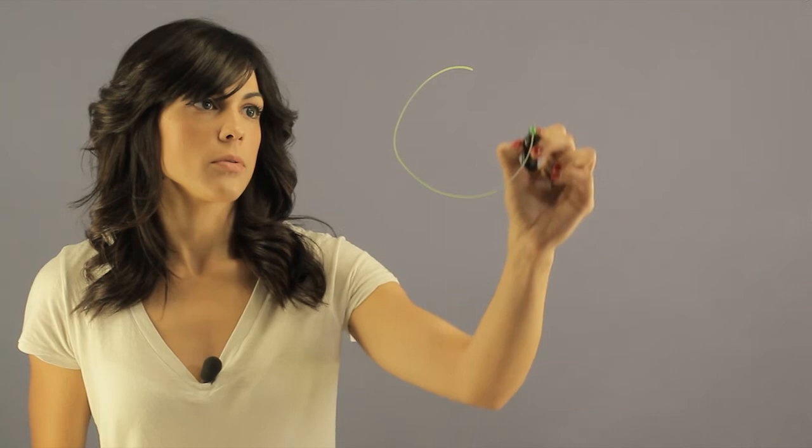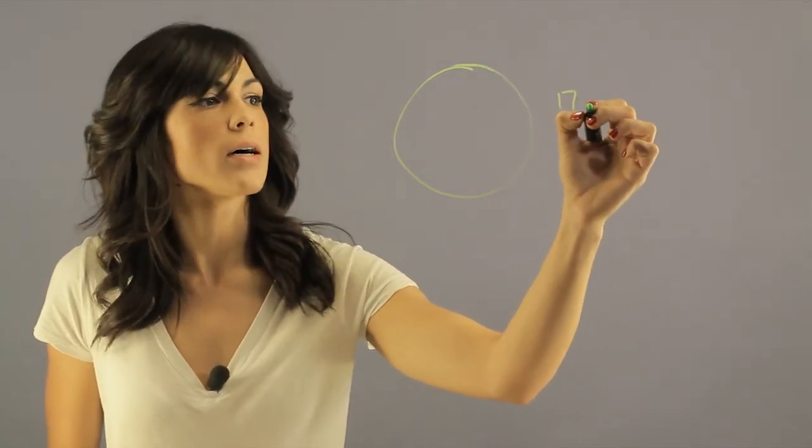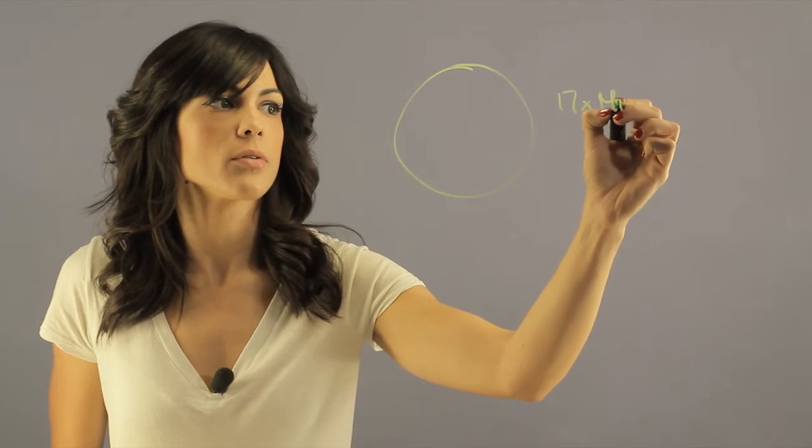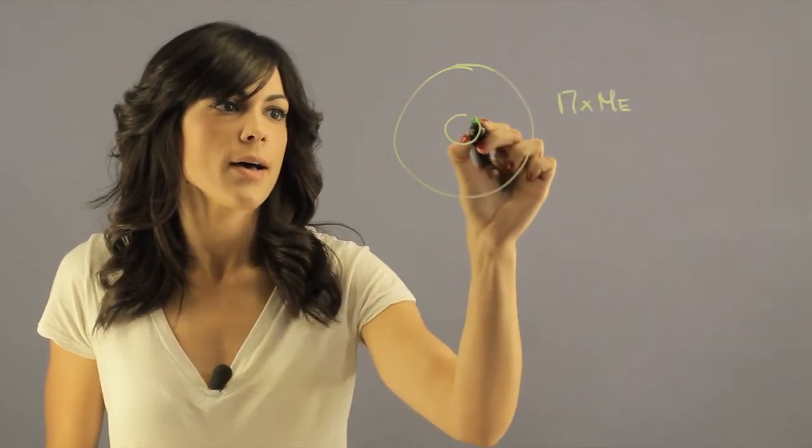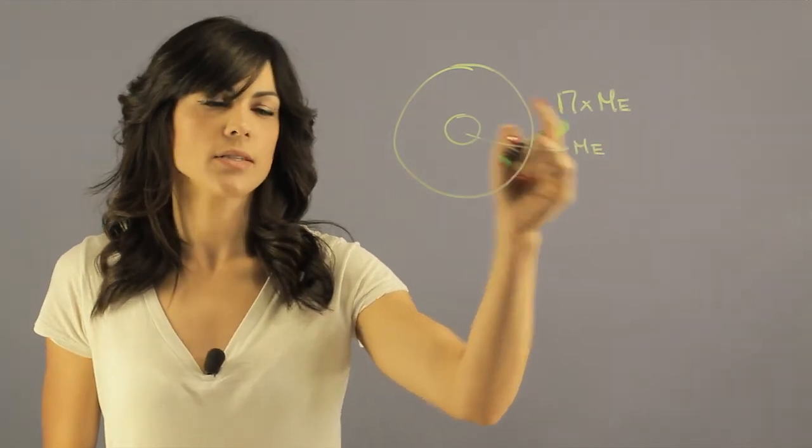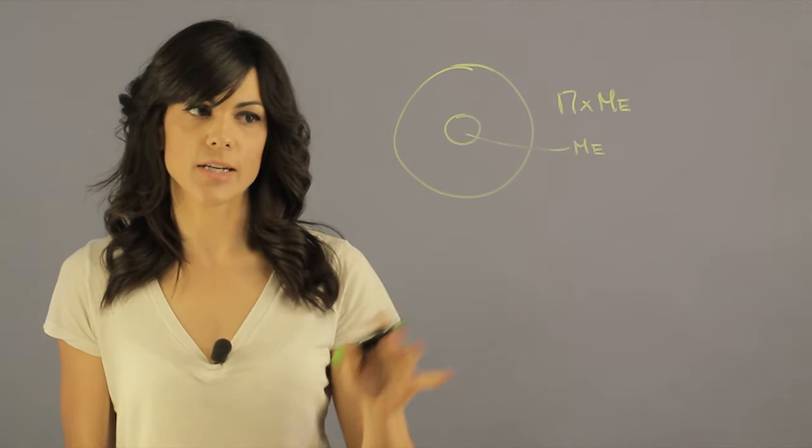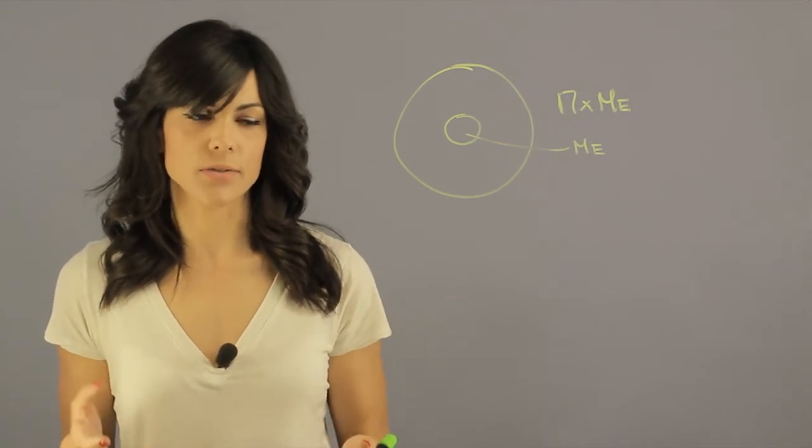So if we look at Neptune, it's about 17 times the mass of the Earth, and because we have this rocky core, which is the mass of the Earth, it means that we still have 16 times the mass of the Earth that is not rocky, so it's gaseous.